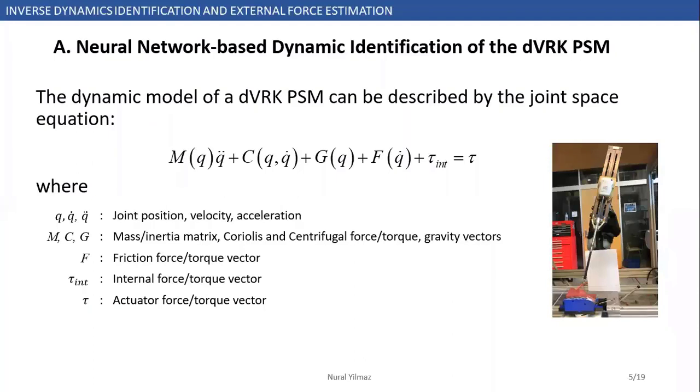The backbone of our method is the dynamic identification based on neural network. If there is no external force acting on the robot, the dynamic model can be described for any robot in joint space using this equation. This equation includes any forces affecting the dynamic behavior of the robot except external forces, like inertial forces, Coriolis and centrifugal force torques, gravitational forces, friction force torques, and internal force torques. Here, internal force torques can be any forces which are uncertain on the mechanism.